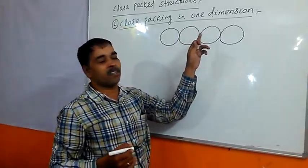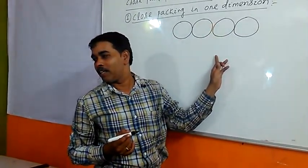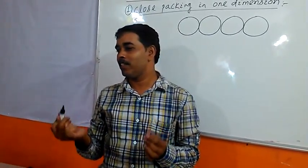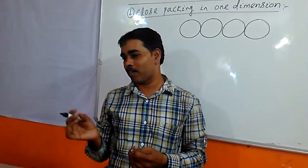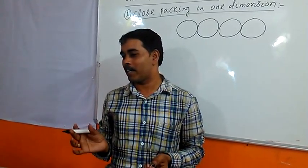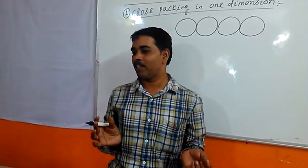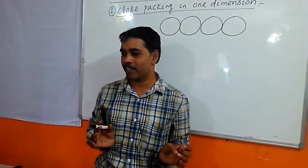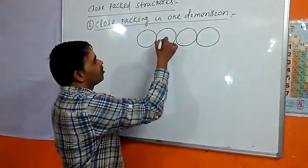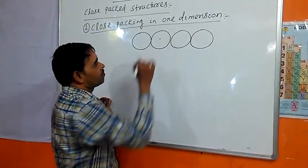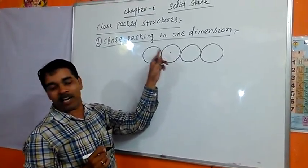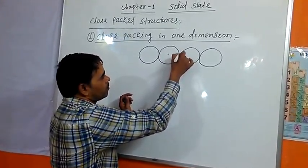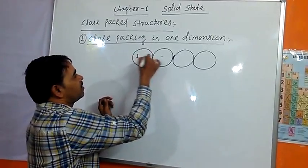Then we will find the coordination number of each atom in this packing. What is coordination number? Coordination number is the nearest number of neighboring atoms which surround a particular atom in a crystal lattice. So now tell me, what is coordination number of this atom? How many atoms are directly touching to this atom? One, this is two.